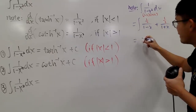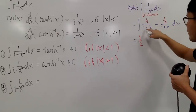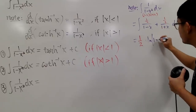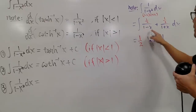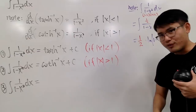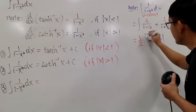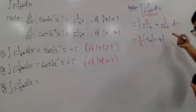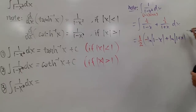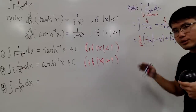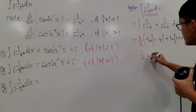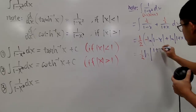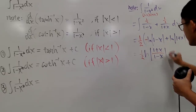Both terms have one-half, so factor that out front. When you integrate 1 over 1 minus x, you get negative ln of the absolute value of 1 minus x, because the derivative of 1 minus x is negative 1, so you divide by negative 1 and include that negative sign. When you integrate 1 over 1 plus x, you get positive ln of the absolute value of 1 plus x, since the derivative of 1 plus x is just 1. Combining the natural logs, the negative sign puts 1 minus x in the denominator, giving one-half times ln of the absolute value of 1 plus x over 1 minus x.